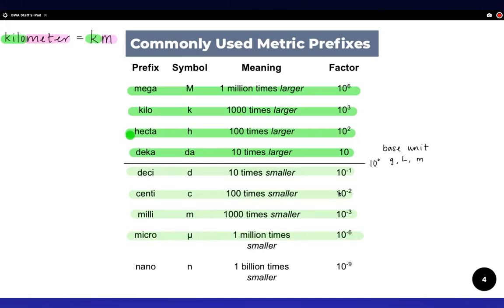micro is a million times smaller, and a nano is a billion times smaller.